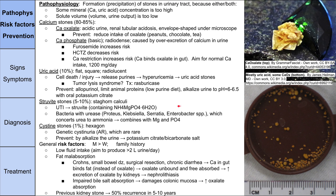The least common stone is cysteine stones — only about 1 percent. They're hexagon in shape and pretty rare. They occur with genetic cystinuria, which is an autosomal recessive disease. You can prevent these by alkalizing the urine — giving potassium citrate or bicarbonate salt.